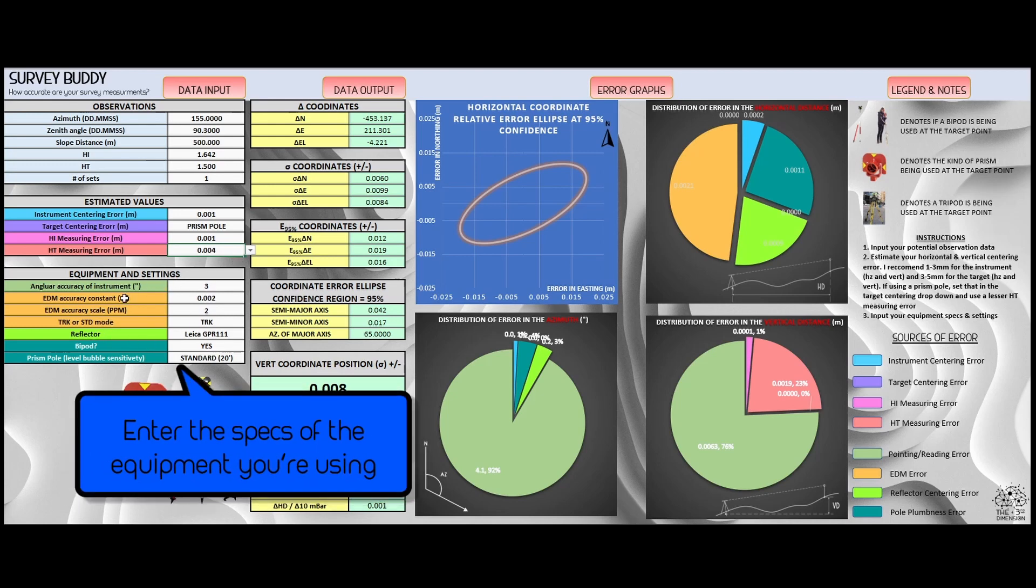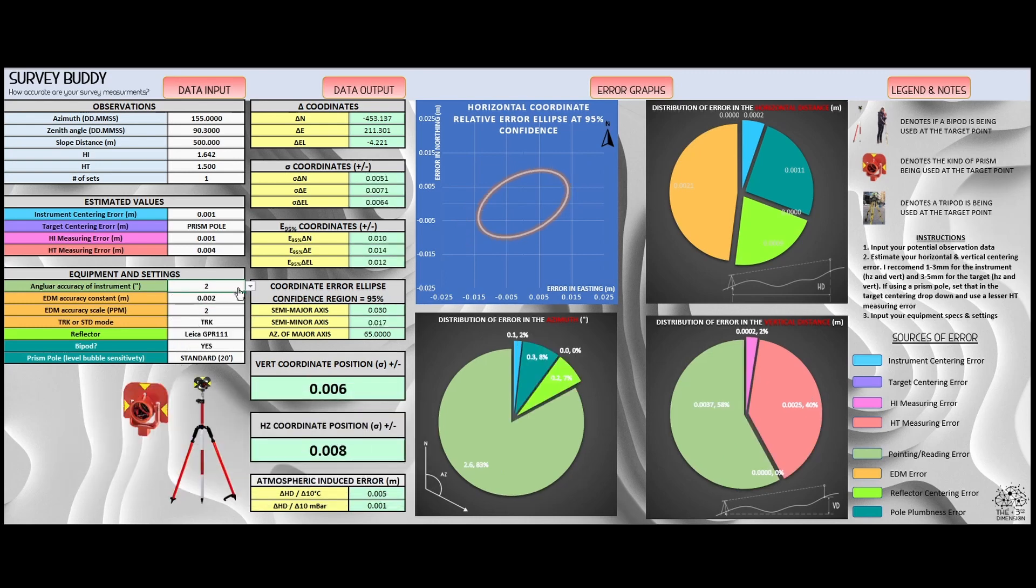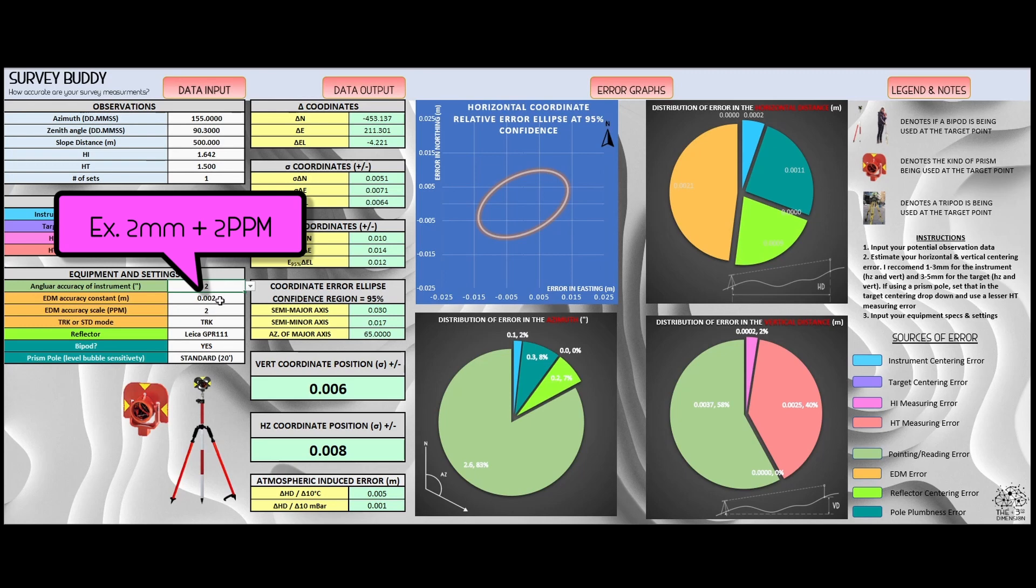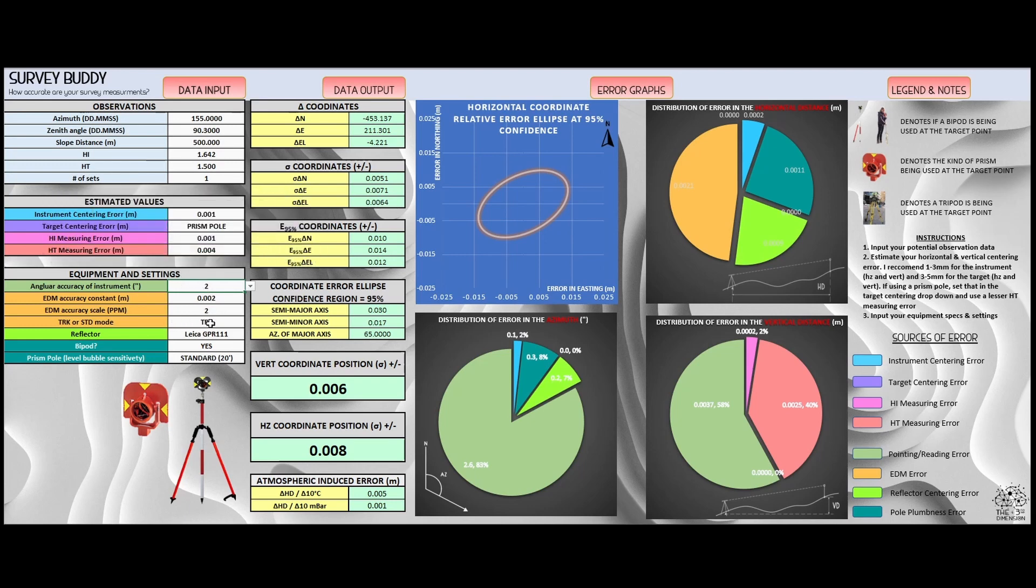The next are the settings of the equipment you're using. Are you using a three second gun, a one second gun, a half second gun, a five second gun? I usually use a two second gun, so I'm going to go with that for today. The EDM accuracy constant and the EDM accuracy scale part are both just supplied to you from your manufacturer. My gun is a two mil plus or minus two ppm gun, so that's what we'll start off at. Tracking or standard mode: when you're in tracking mode, every measurement that the gun is taking is a single distance measurement. But when you're in standard mode, depending on how you have your data collector set up, it's going to average three to five measurements. I think five is pretty typical, so that's what I have it set up for the equations that calculate this.